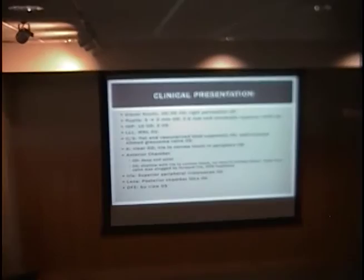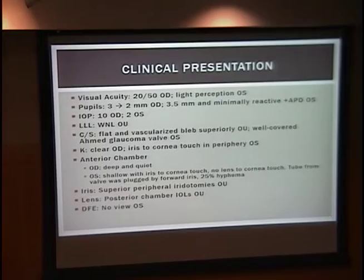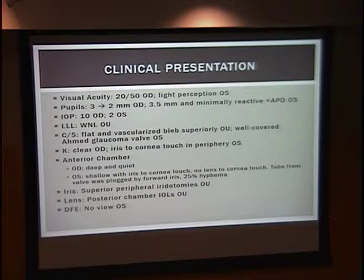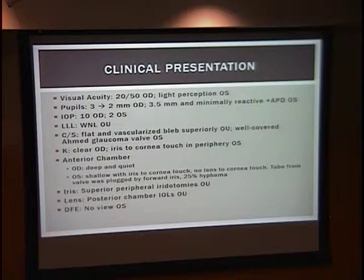There was a well-covered Ahmed glaucoma valve in the left. His conjunctiva was clear in the right, and he had iris to cornea touch in the periphery of the left eye. The anterior chamber of the right eye was deep and quiet. The left eye was shallow and showed iris to cornea touch, but no lens to cornea touch. The tube from the valve was plugged by forward iris, and there was a 25% hyphema. Both irises had superior peripheral iridotomies, and his lenses were posterior chamber IOLs in both eyes, with no view to the back on the left.